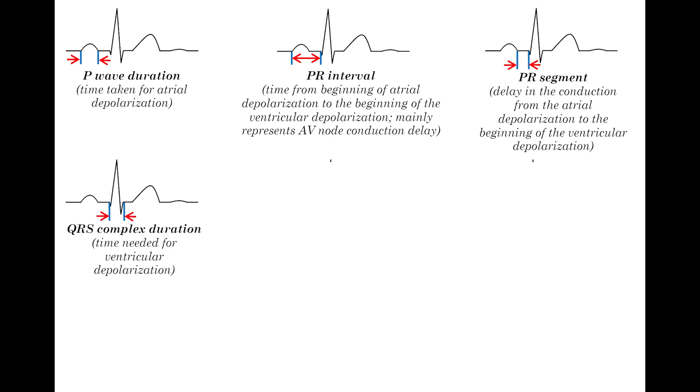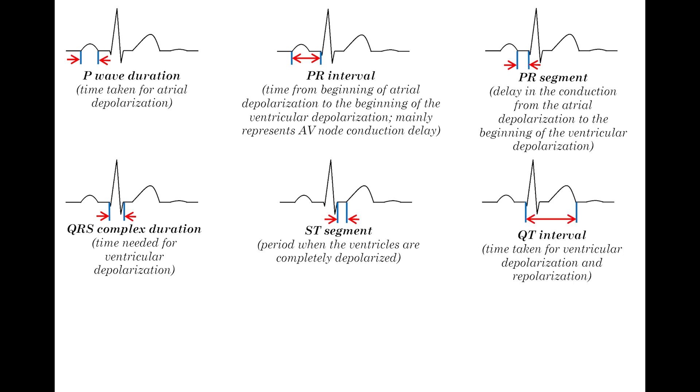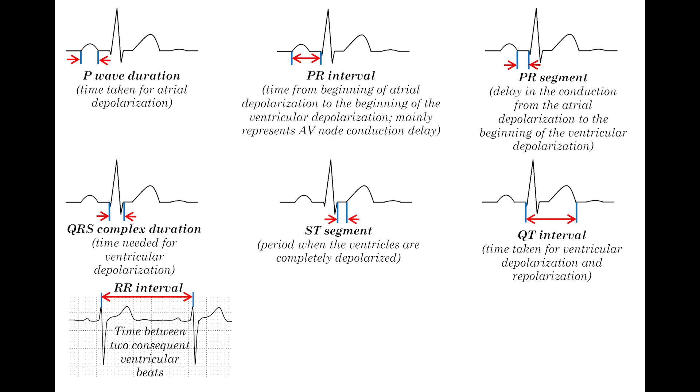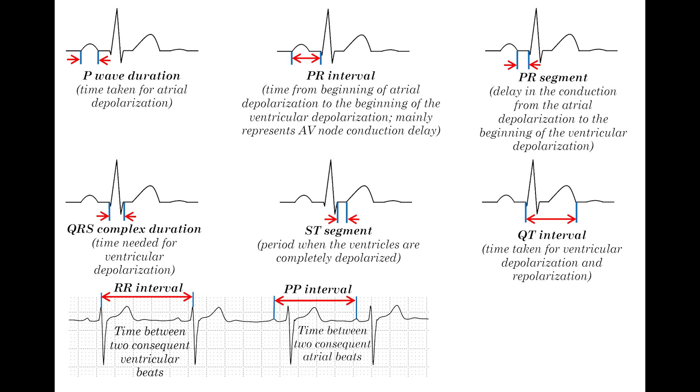QRS complex duration is the time required for ventricular depolarization. ST segment is the period when the ventricles are fully depolarized. QT interval is the time required for ventricular depolarization and repolarization. RR interval is the time between two consecutive R waves. PP interval is the time between two consecutive P waves.